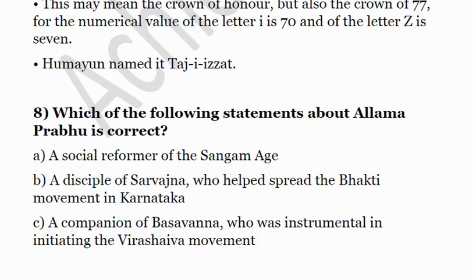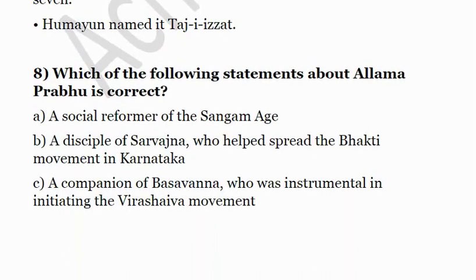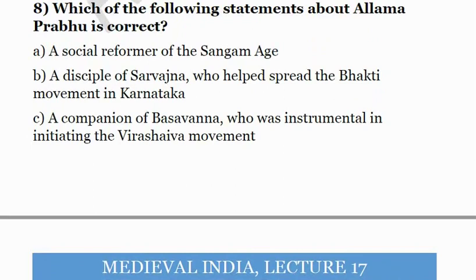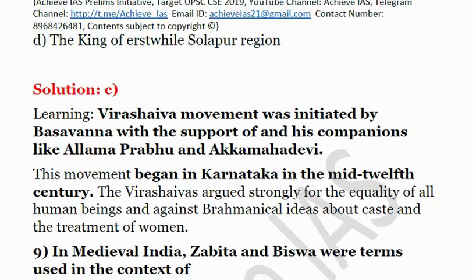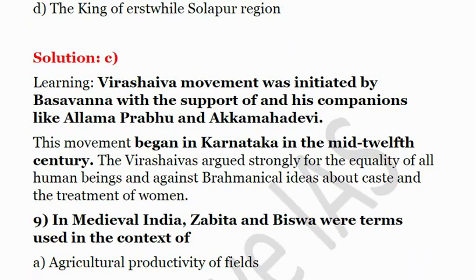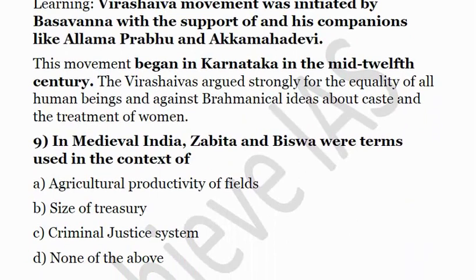Eighth question: Which of the following statements about Allama Prabhu is correct? A) A social reformer of the Sangam age, B) a disciple of Sarvajna who helped spread the Bhakti movement in Karnataka, C) a companion of Basavanna who was instrumental in initiating the Veerashaiva movement, D) the king of the Sholapur region. The answer is C. Allama Prabhu was a companion of Basavanna — a Brahmin from Karnataka who led the formation of the Veerashaiva movement, also known as the Shaivite movement, which was against Brahmanical rituals. This movement began in Karnataka in the mid-12th century, and Basavanna's companions included Allama Prabhu and Akkamahadevi.